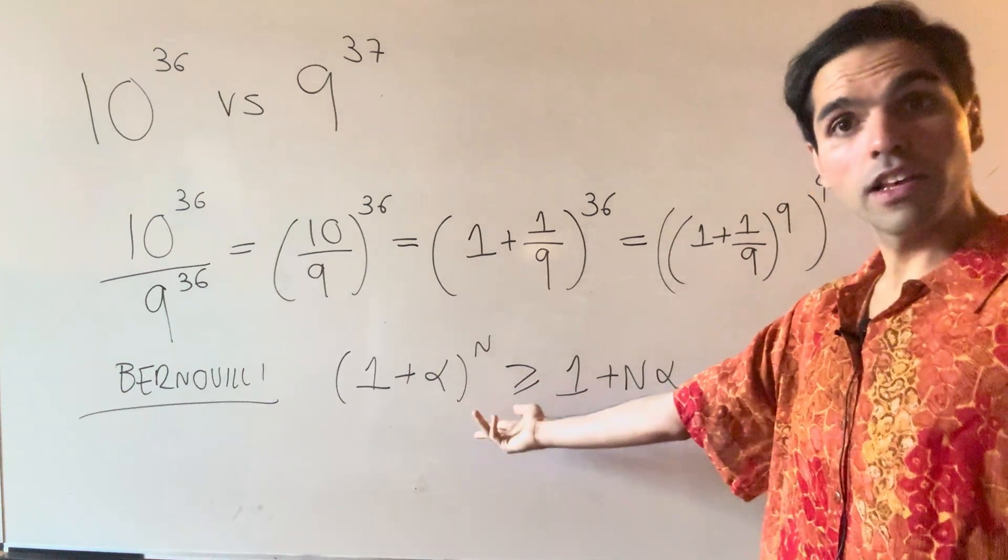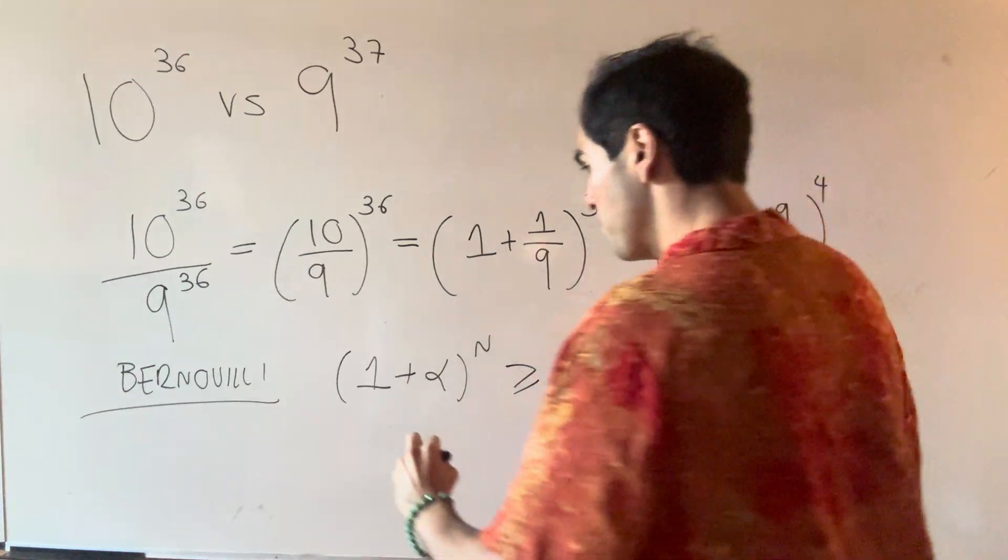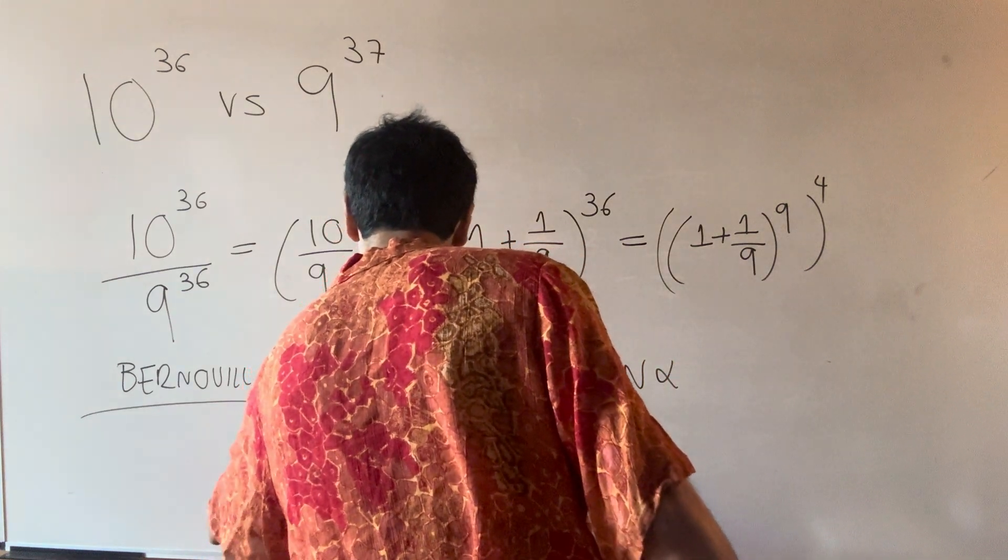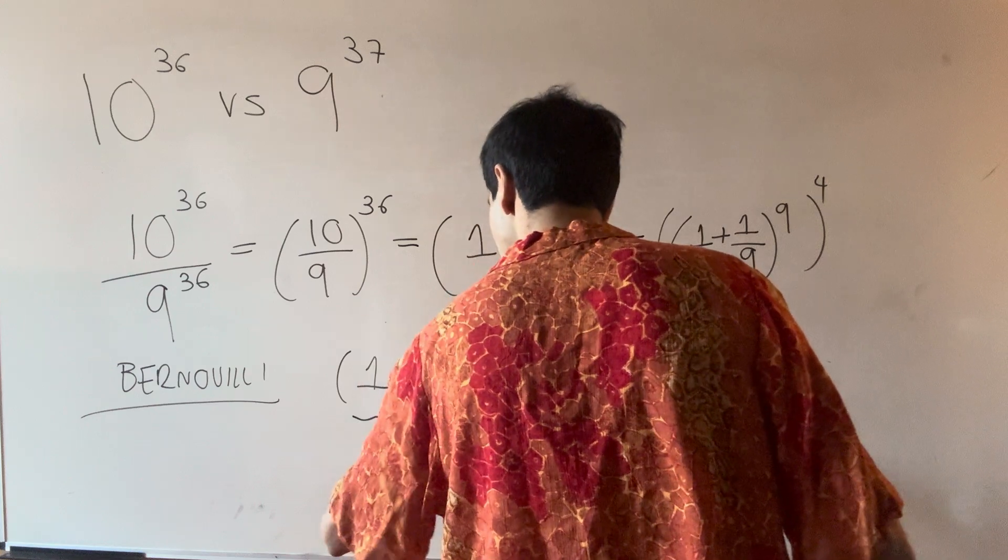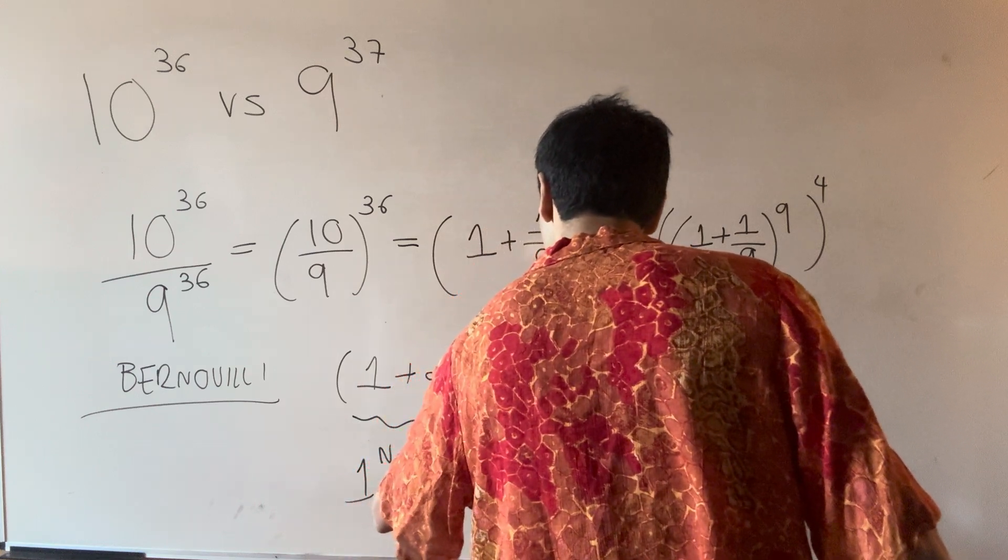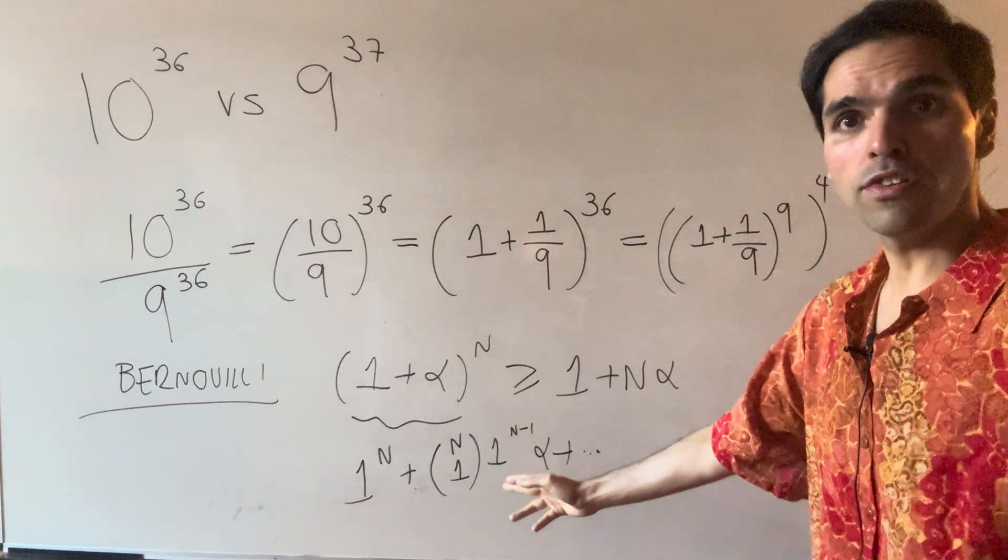And the reason for this is, by the way, it's just a binomial expansion because this thing is 1^n plus, I believe, n choose 1 times 1^(n-1) times α plus other positive terms.